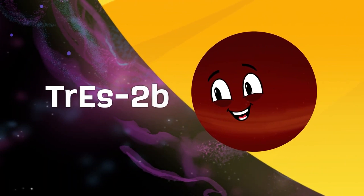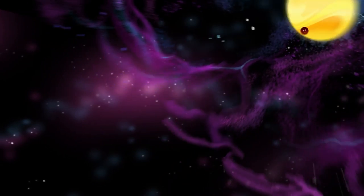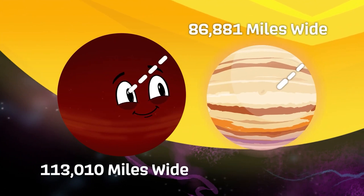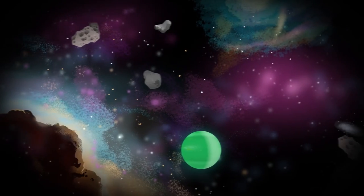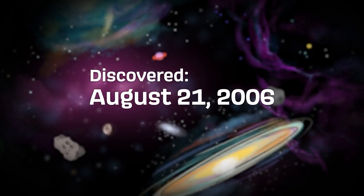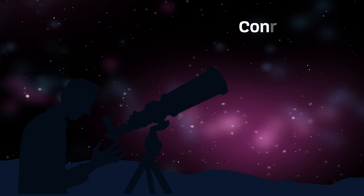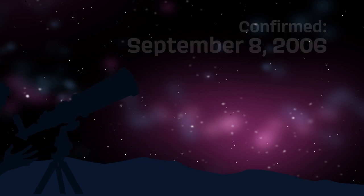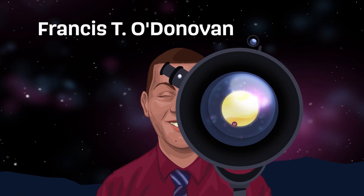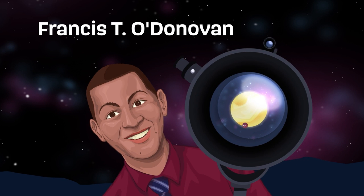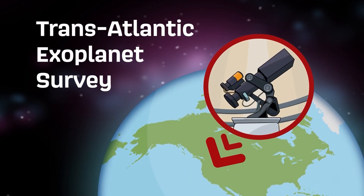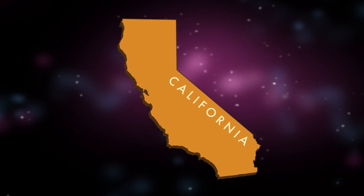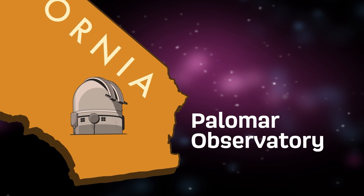My name is TRES-2B. I'm a gas giant too far away to see. I'm the darkest exoplanet ever identified. I'm a bit bigger than Jupiter. With the discovery date of August 21st, 2006, is when they noticed me at first. I was confirmed a planet on September 8th, 2006, officially my birth date. I was discovered by an astronomer named Francis T. O'Donovan. First seen on the Trans-Atlantic Exoplanet Survey, or you can call it TRES.